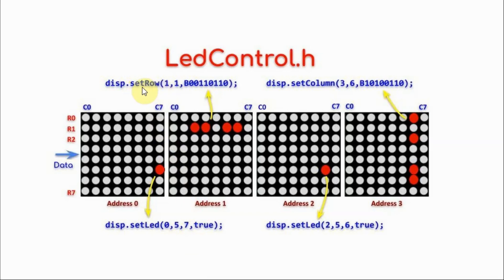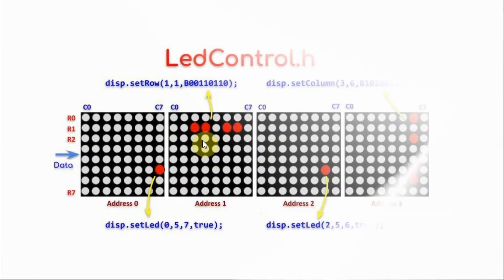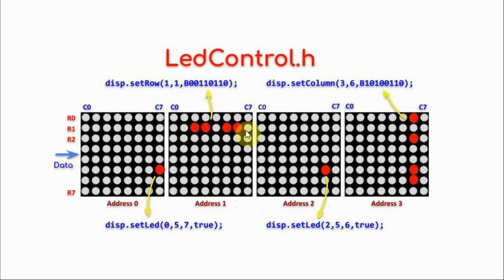The setRow function allows for a row of LEDs to be controlled at a certain row and a certain address. For example, if we want to display a particular pattern, we use the setRow function. The first argument is the address number, the second argument is the row number, and the third argument is the byte value starting from the most significant bits, for example 00110110.